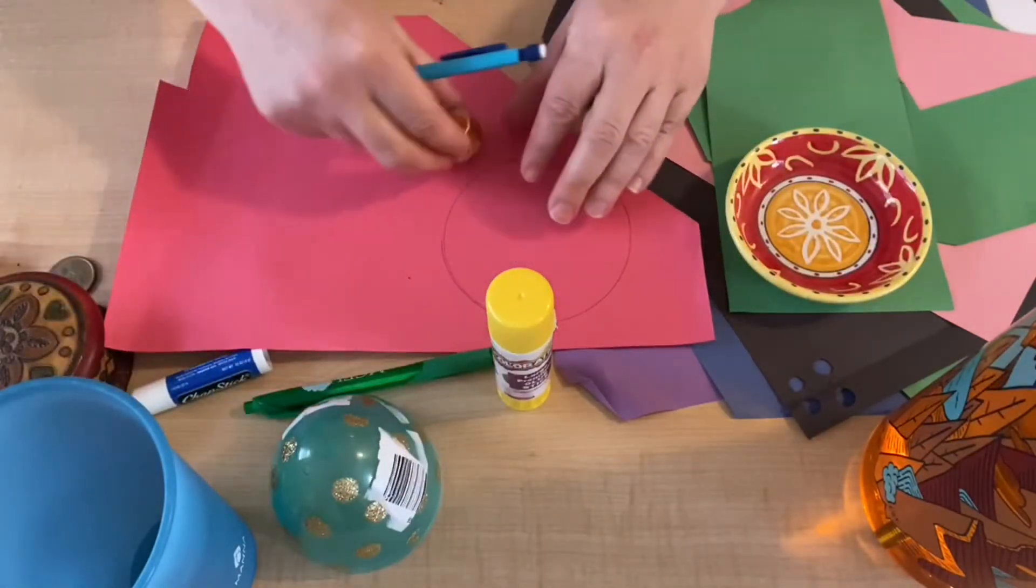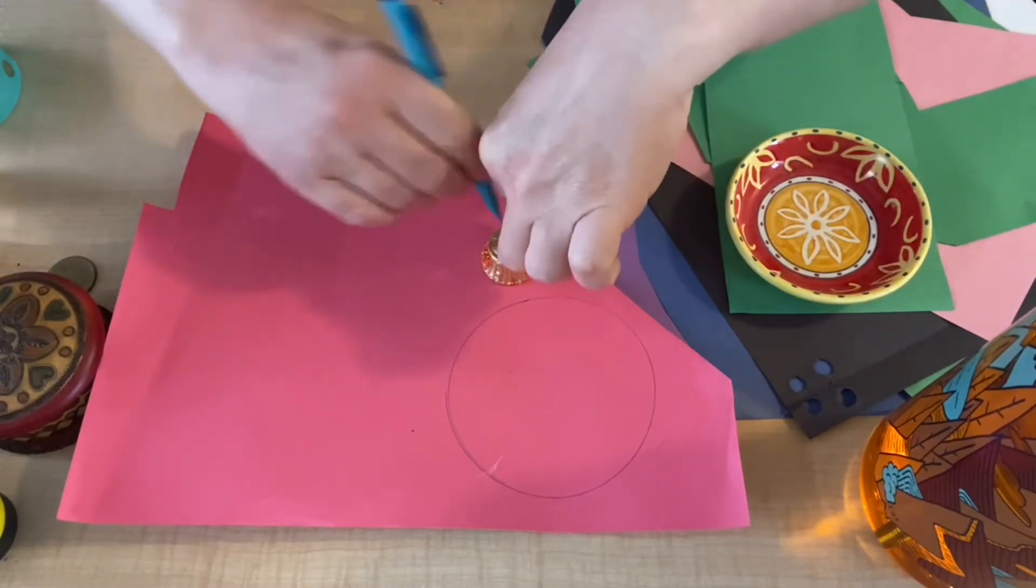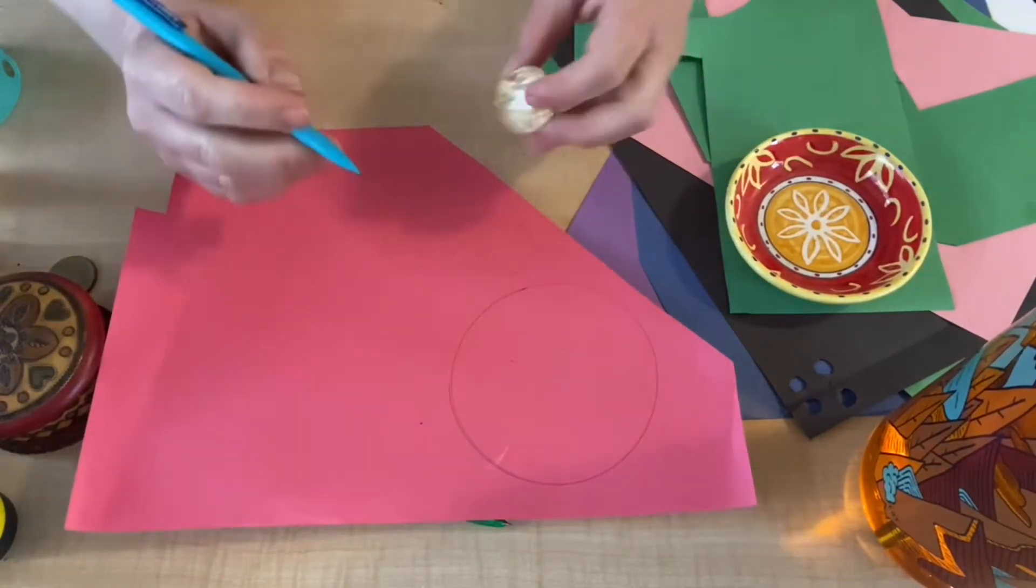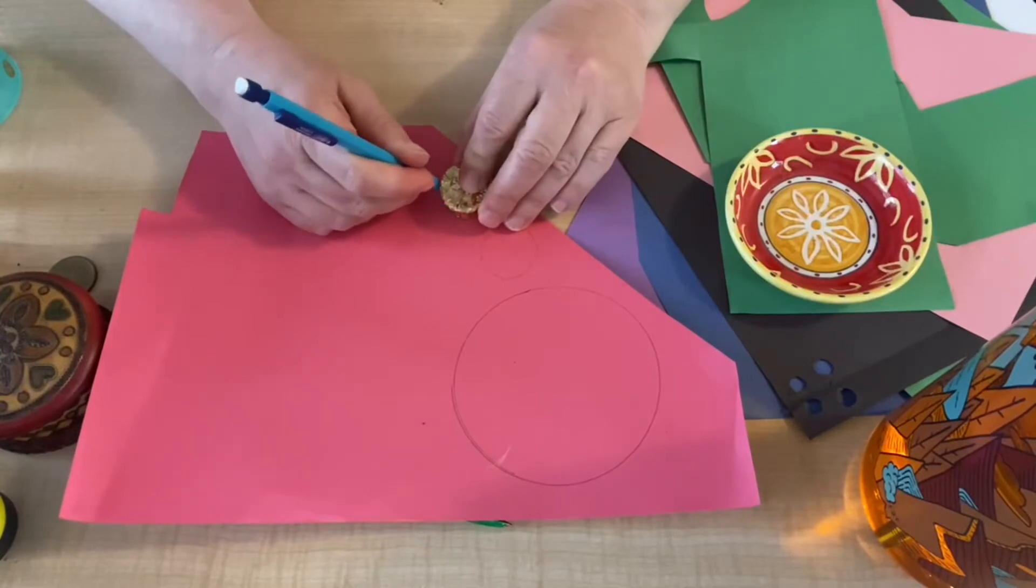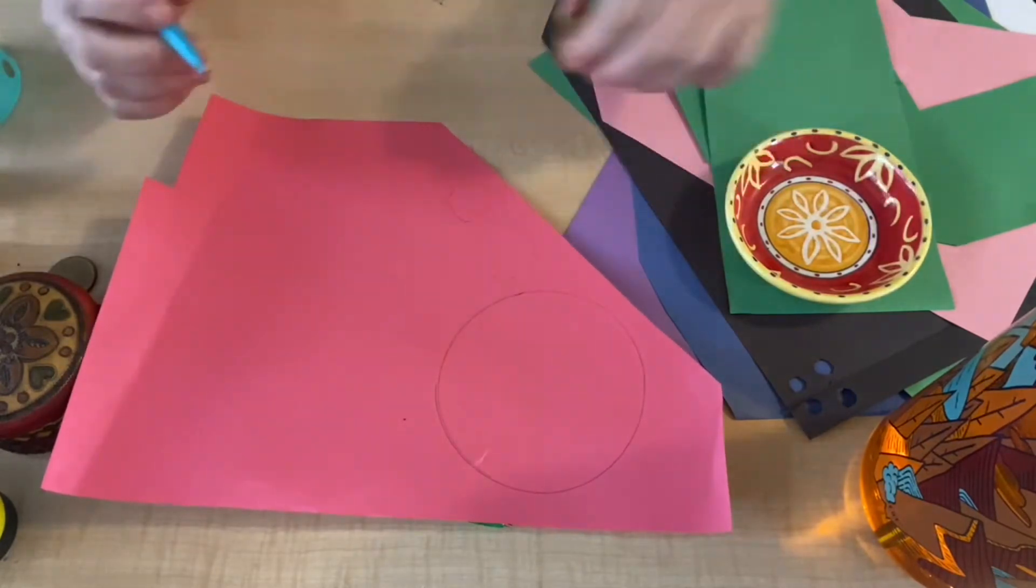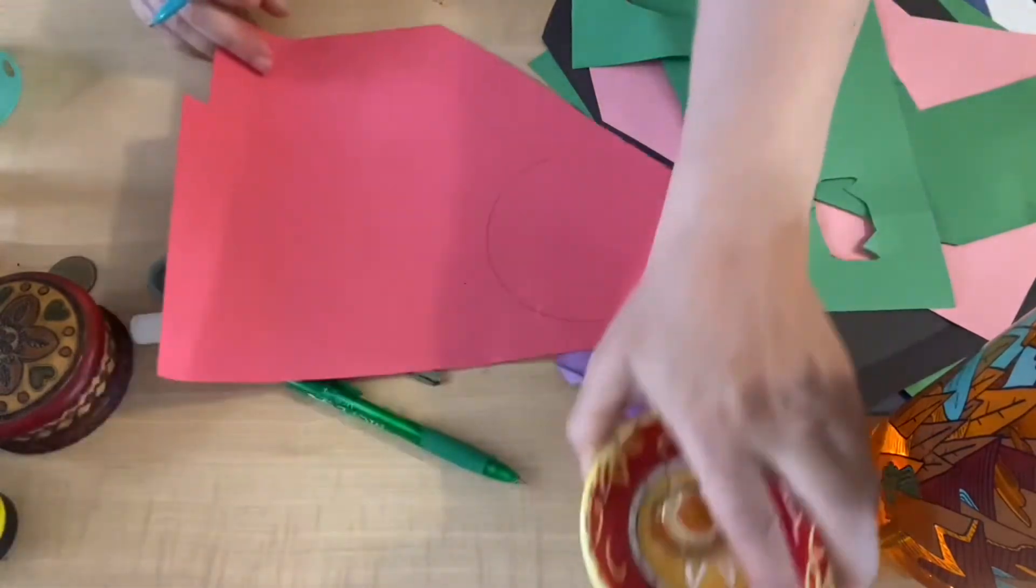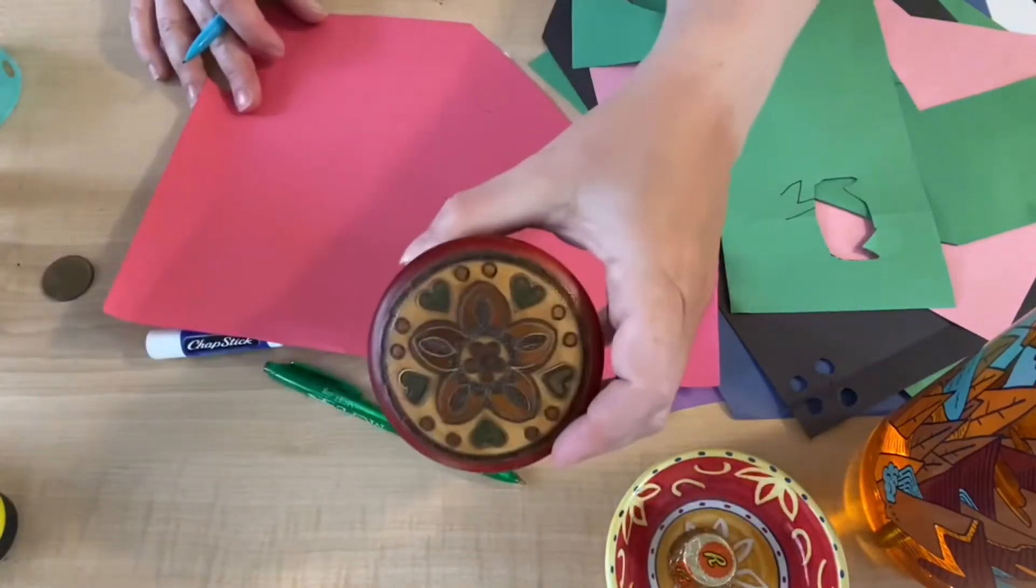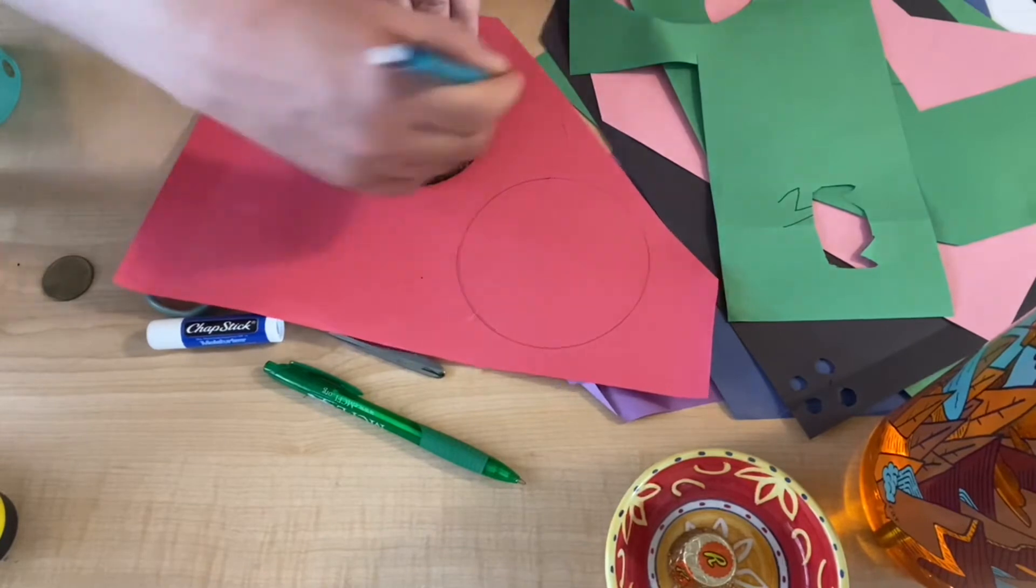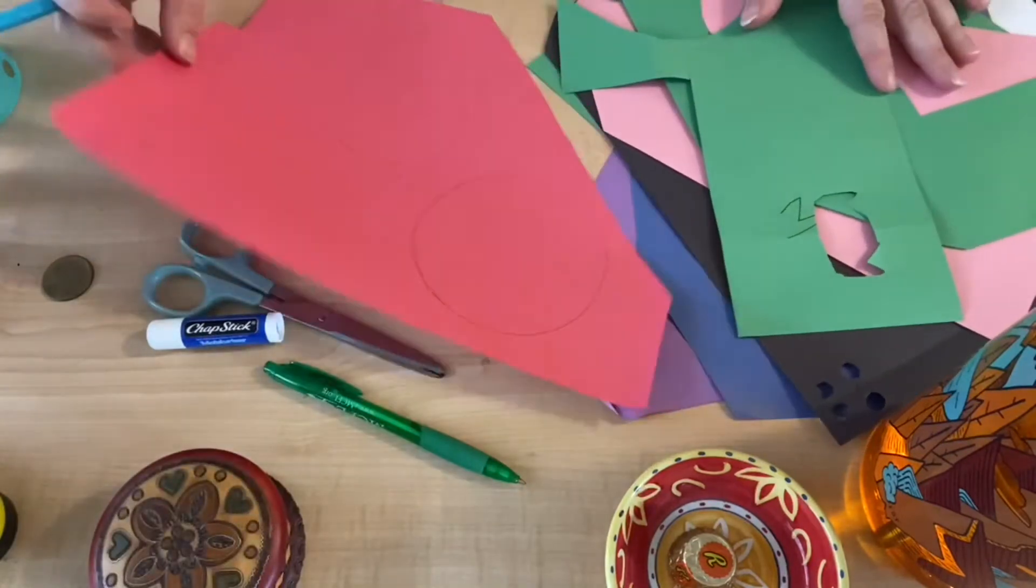I'm also going to use my peanut butter cup to trace, and then I'm going to do the top as well to make a smaller circle. And this one's kind of harder to draw on because of the ridges on here, but still works out to make a circle.